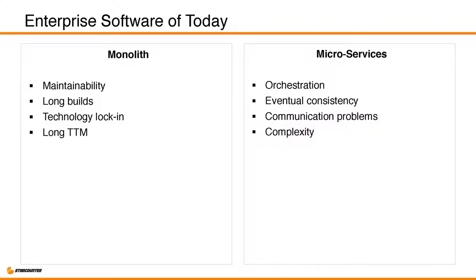When building a big system, a portal, or something to support your business with a user interface, you first have to decide how many things you want to build. In the past it often happened to be one thing — the often-criticized monolith that we really don't like. It's common understanding now that monoliths cause trouble. Some of the problems are complicated builds, poor maintainability, lock-in to specific technologies, very hard to change things, longer time to market, and very limited agility.